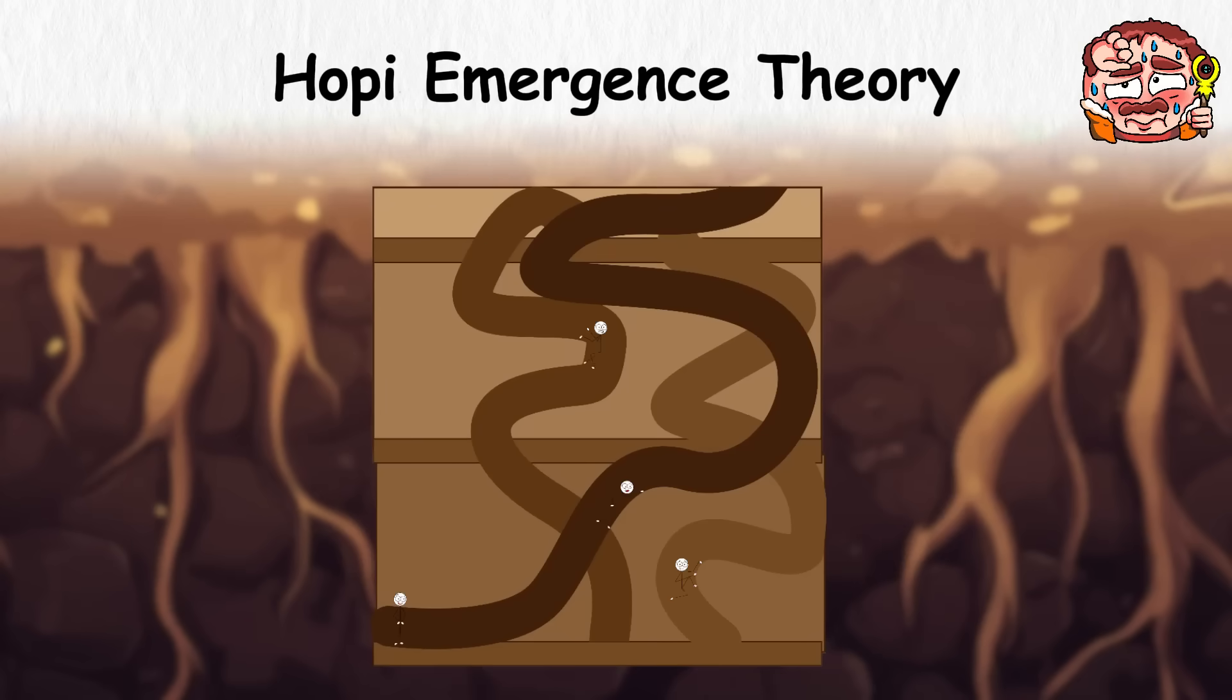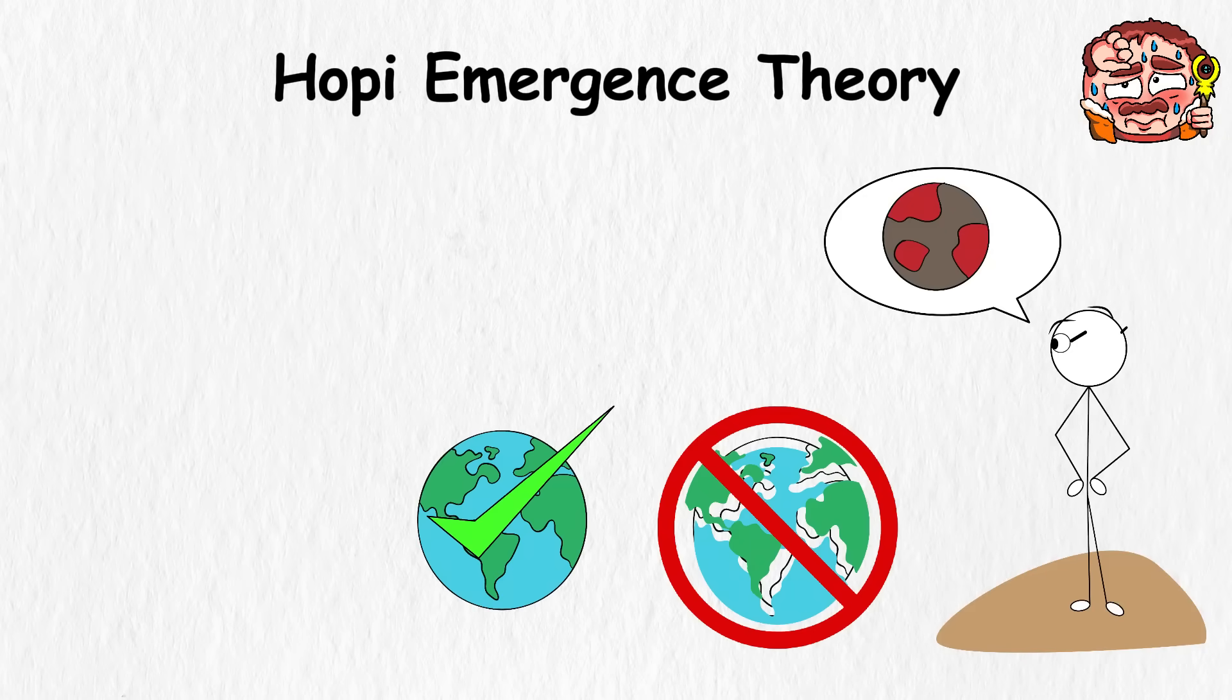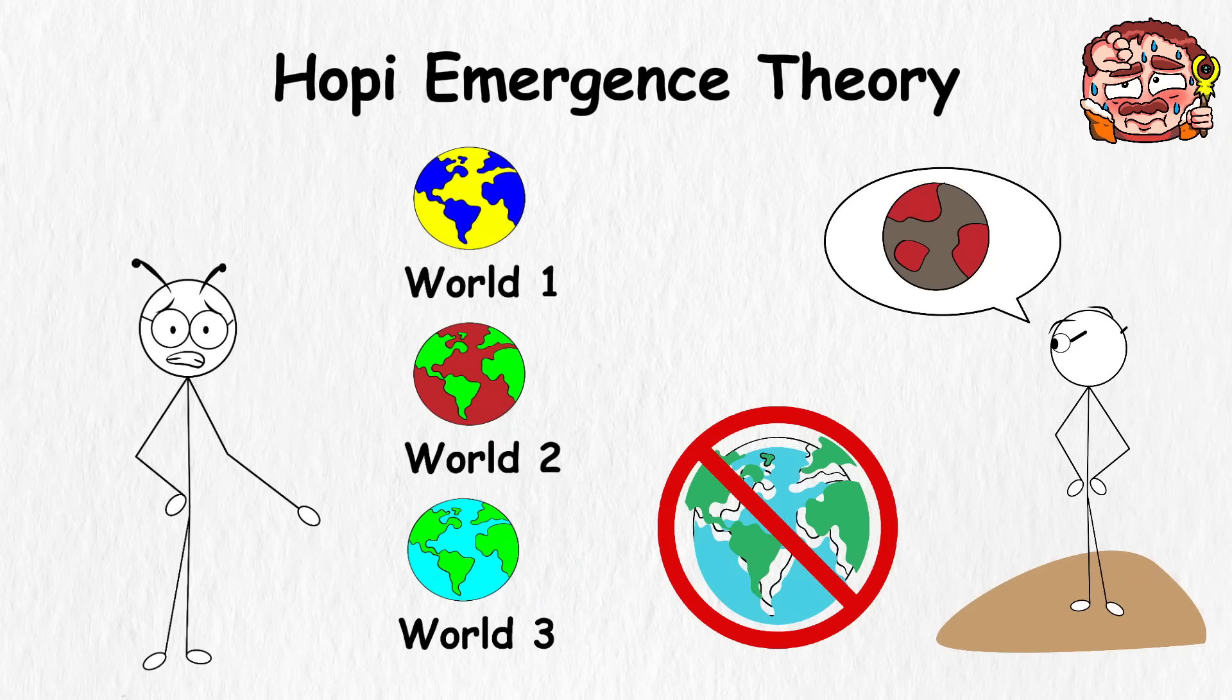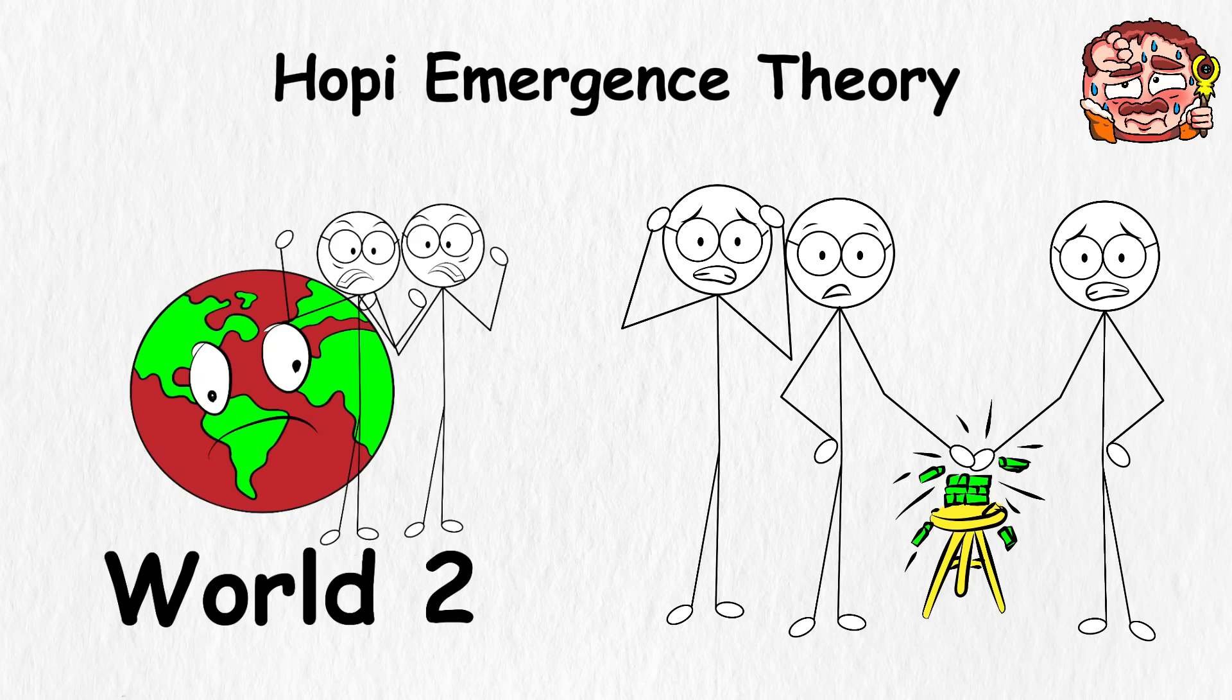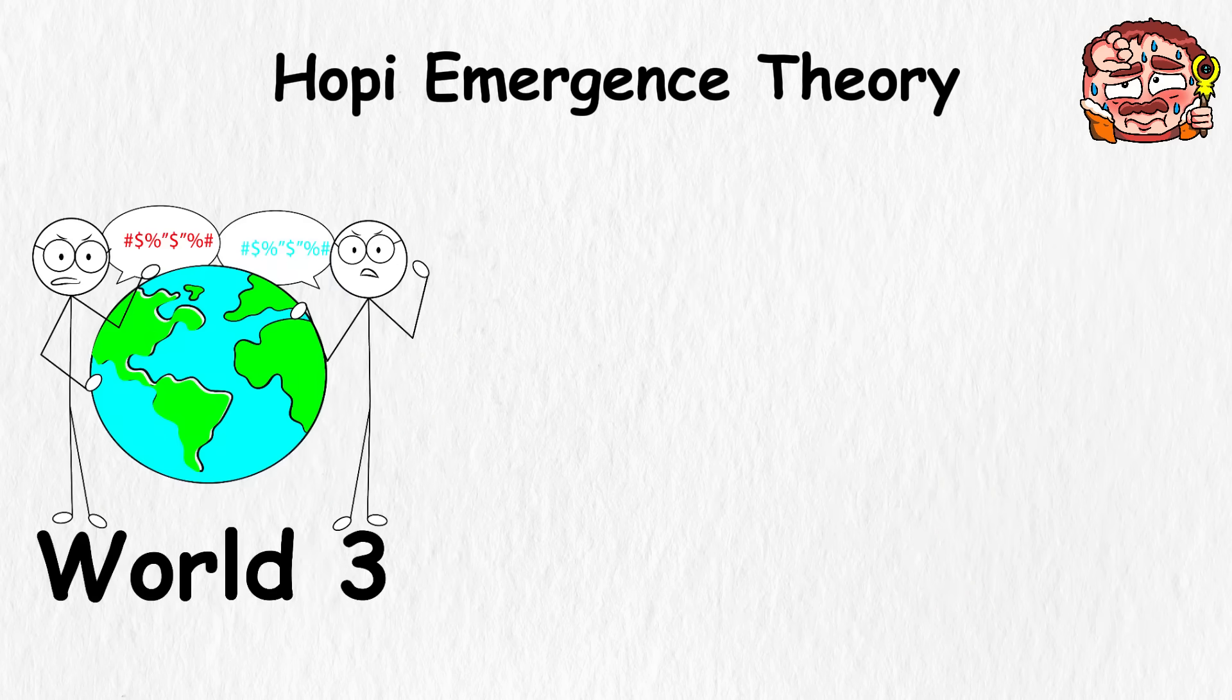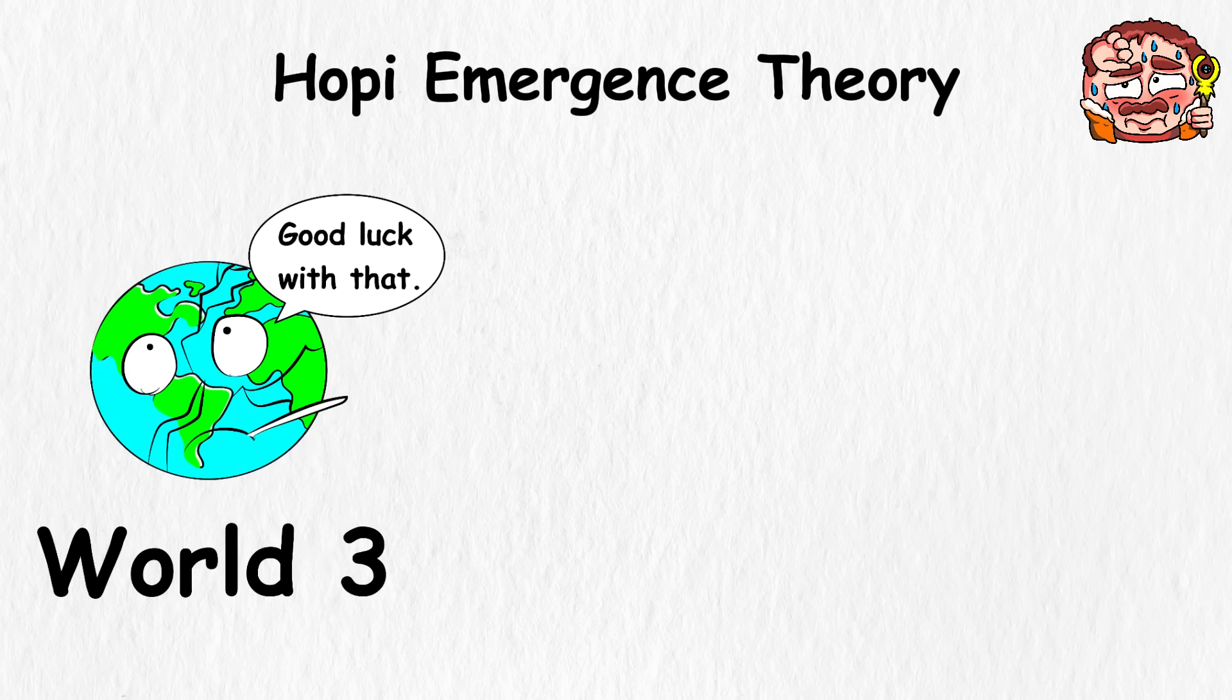Hopi Emergence Theory. Their story starts deep within the Earth, where people moved upward through hidden worlds, until they reached the one we live in now. People didn't always live in this world, this is just the version that didn't collapse halfway through. The Hopis say there were others before it. Each one crashed for a different reason, like a group project that kept falling apart before the deadline. The first didn't have structure. Everything was raw and unsettled. In the second, people forgot how to live with respect. The third collapsed under non-stop arguments. At some point, the world just tapped out and said, good luck with that.